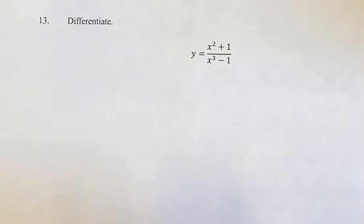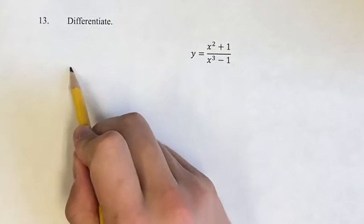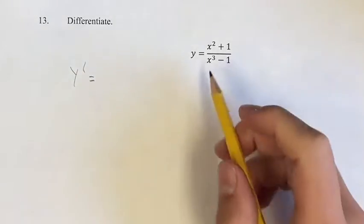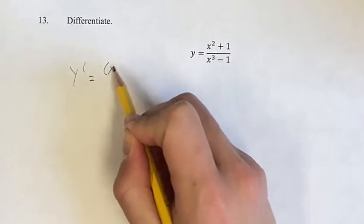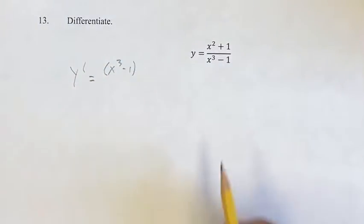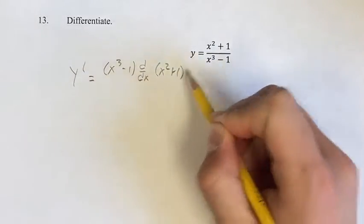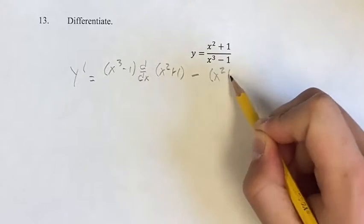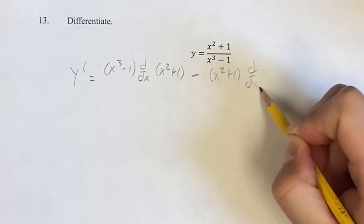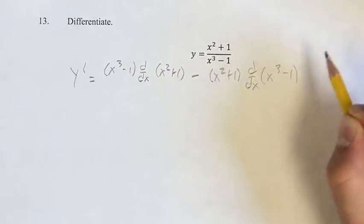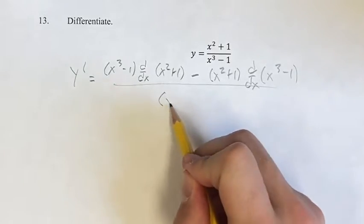The first thing we're going to do is notice that we have a fraction here, so we want to use the quotient rule. Our derivative y prime is going to be the denominator times the derivative of the numerator minus the numerator times the derivative of the denominator. This is all going to be over the square of the denominator.